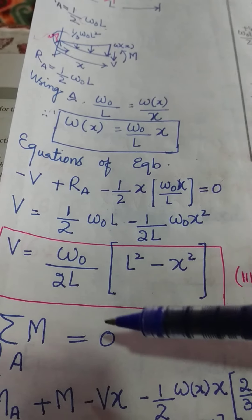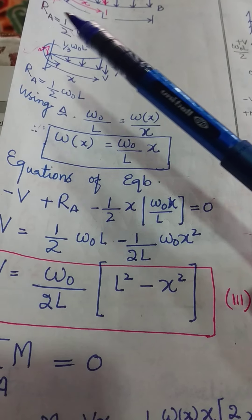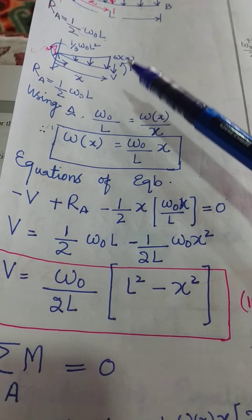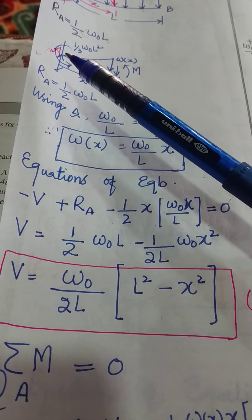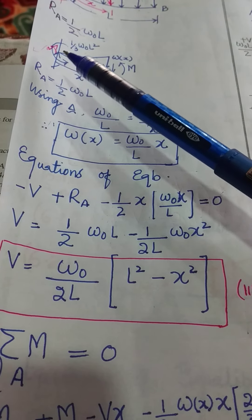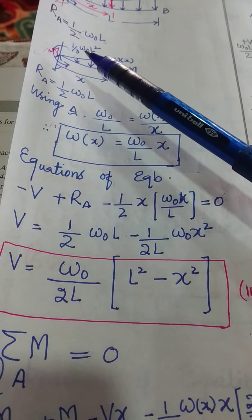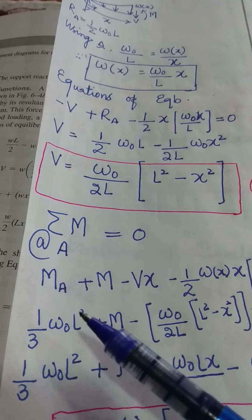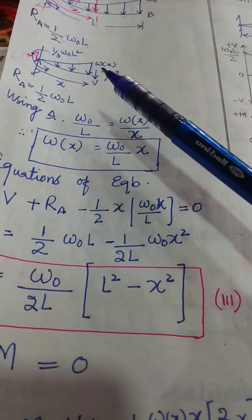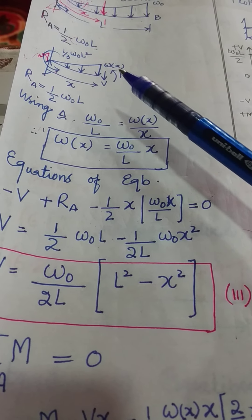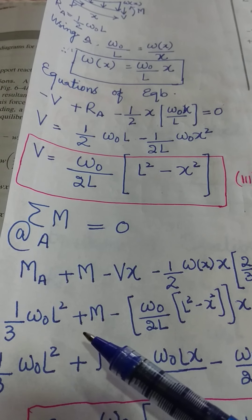Now, after obtaining the value of the shear force, we obtain the equation for the bending moment across the span. For this section, we take the moments about an axis passing through the fixed end A. At end A, we have a moment acting in the anticlockwise direction, that's one third of W naught L squared, and it's positive being anticlockwise. And we have the moment M, whose equation we have to find out.